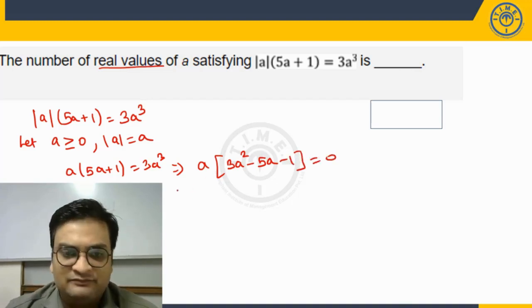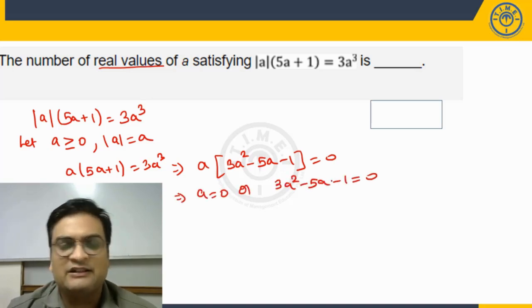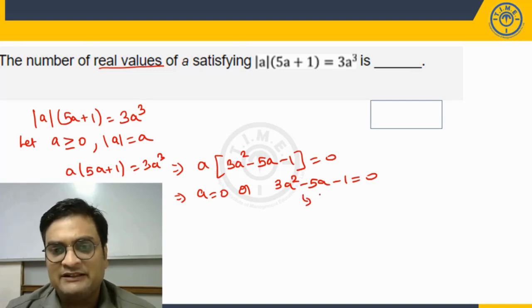So either a is 0, that could be one possibility or the quadratic equation that we get in a, 3a square minus 5a minus 1 is 0. So here the values of a that we will get will be, look at the values of a,